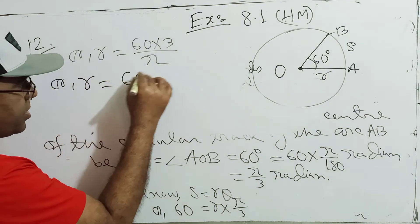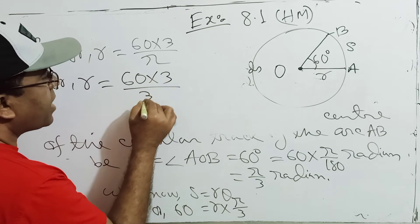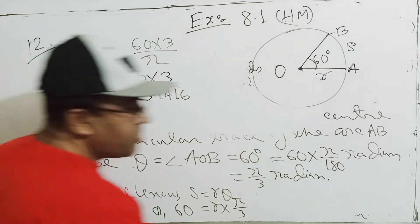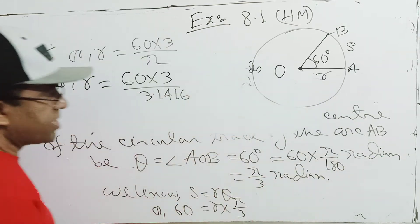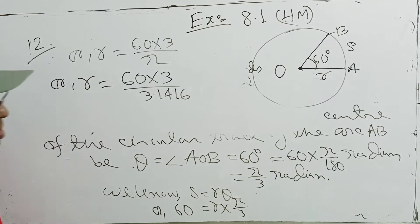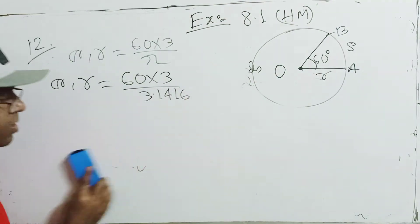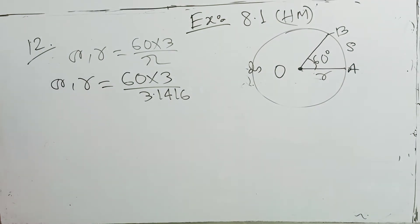R equals 60 into 180 divided by pi, which is 60 into 180 divided by 3.1416. So R equals 60 into 3, into 180 divided by 3.1416, giving approximately 57 meters — wait, let me recalculate.